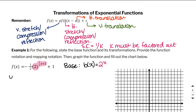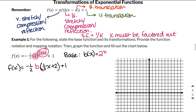Then I'm going to say F of X equals negative one-half times B of, and the input is one-third X plus 2, and then plus 1 on the outside. Now I need to factor this K out. F of X equals negative one-half times B of — when I factor that K value out, I get one-third. Pulling that out, I get X plus 6, because I divide 2 by one-third, which is the same as multiplying 2 by 3. Then there's that plus 1 on the outside.